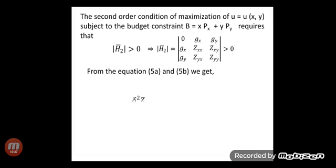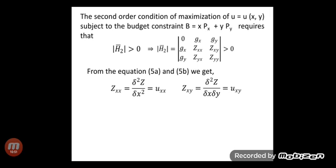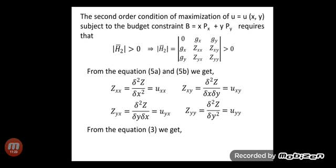From equations 5a and 5b, zxx, the second order partial derivative of z with respect to x, equals uxx. The term zxy, the second order cross-partial derivative with respect to x and y, equals uxy. Similarly, zyx equals uxy. The partial derivative of the budget constraint g with respect to x is gx = px, and the partial derivative with respect to y is gy = py.